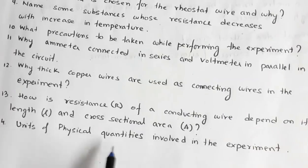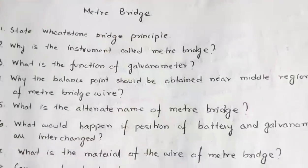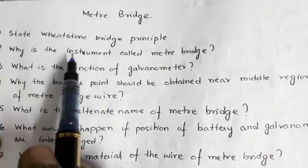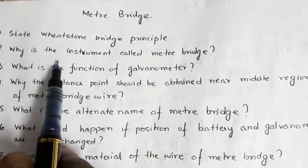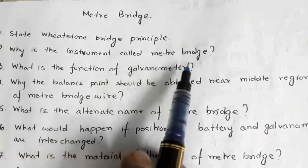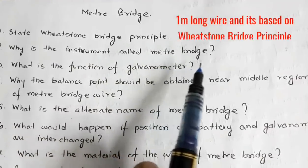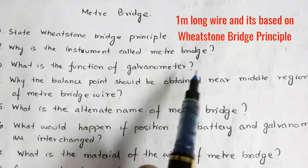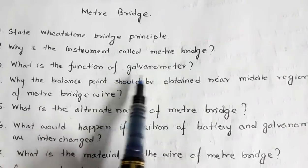You must be aware of the units of the physical quantities involved in the experiment. Next is the topic of meter bridge. You may be asked: state the Wheatstone bridge principle. Why is the instrument called a meter bridge? It is called a meter bridge because it has a one-meter long wire.